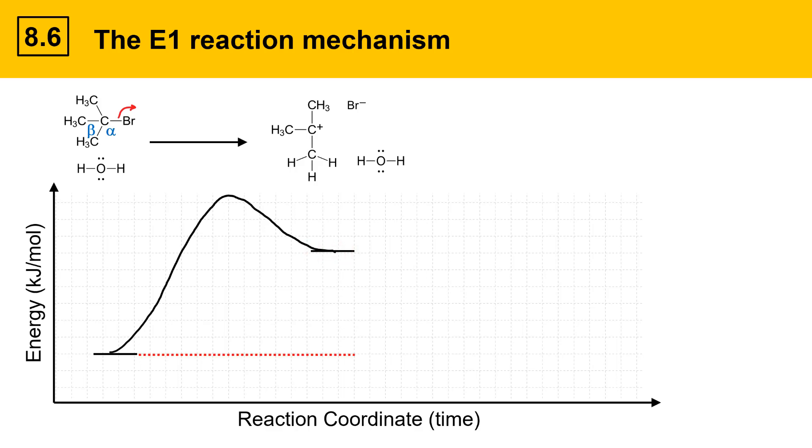We can extend a reference line out from the starting materials and then measure the energy from the starting materials to the transition state. This is going to be Ea sub 1. This is the activation energy of the first step.